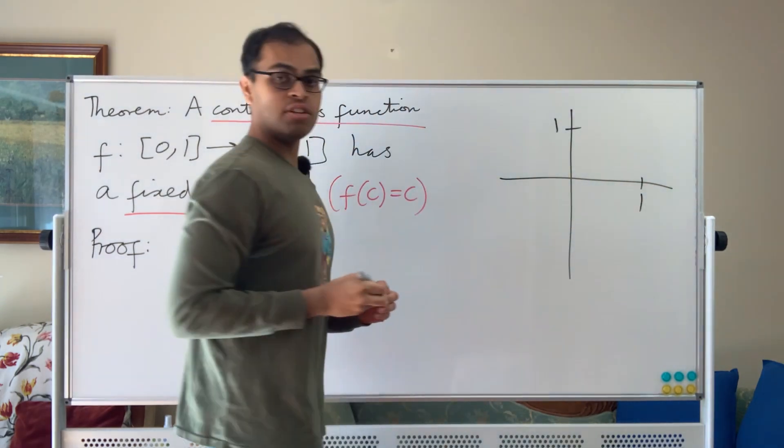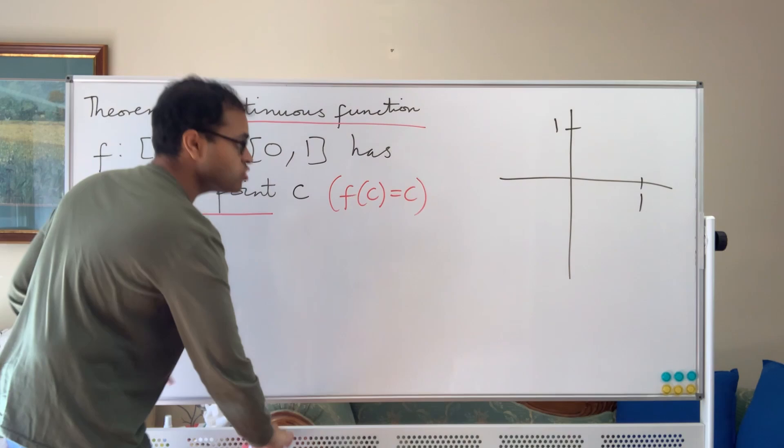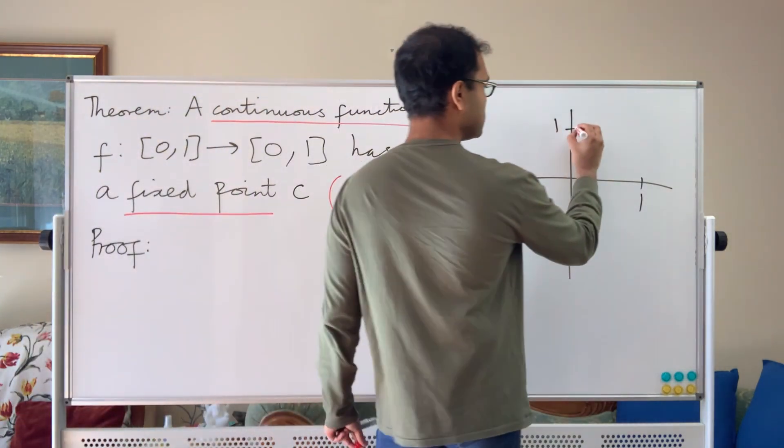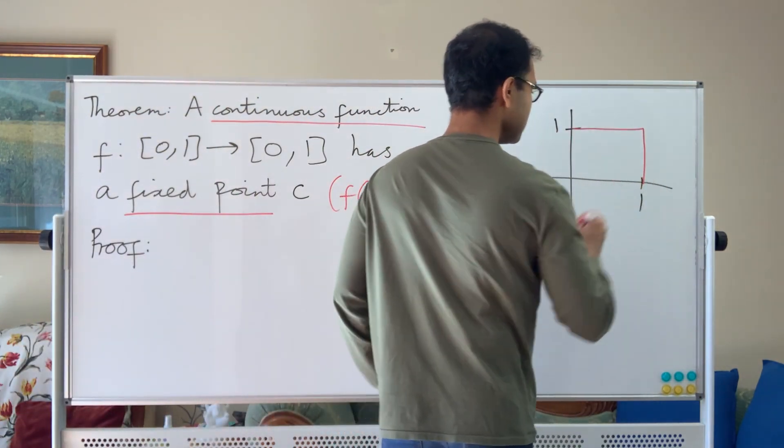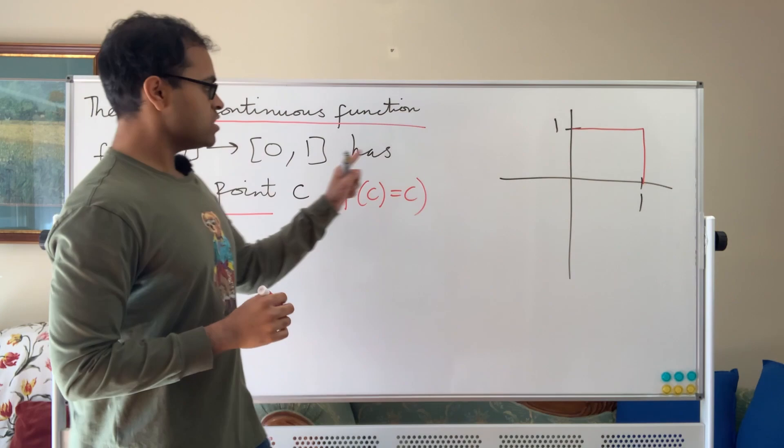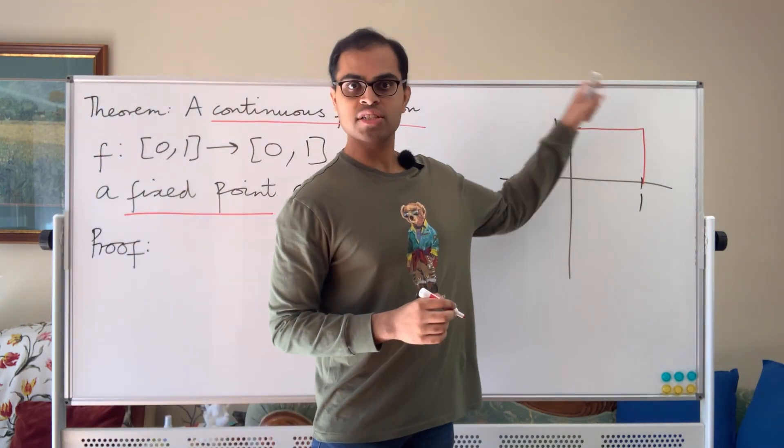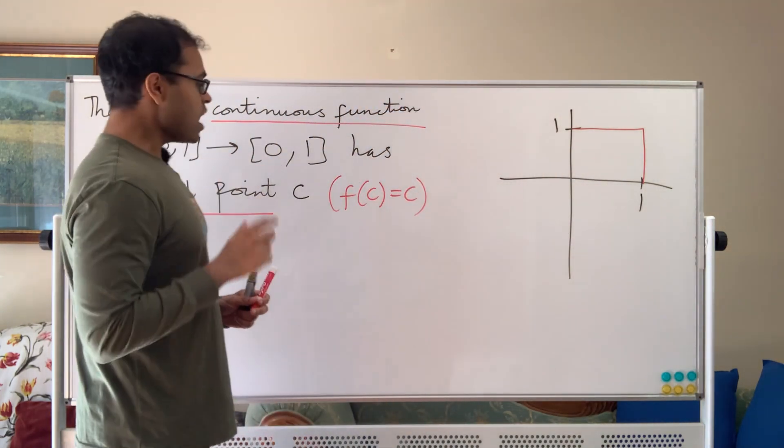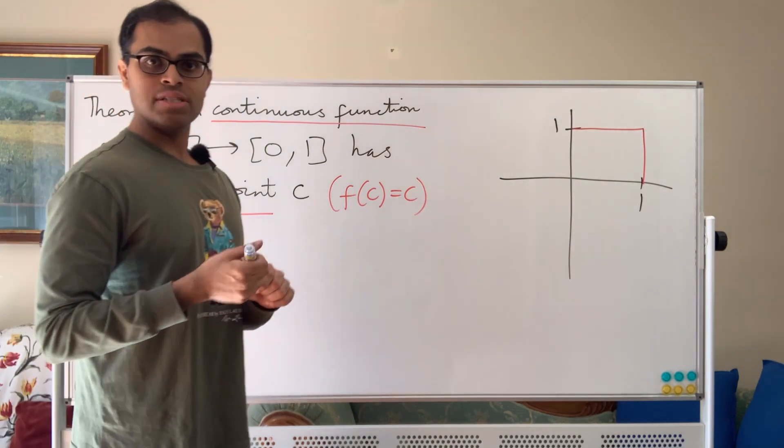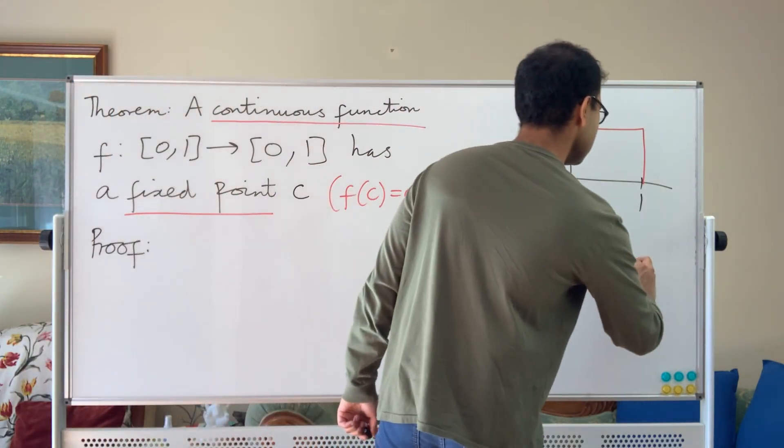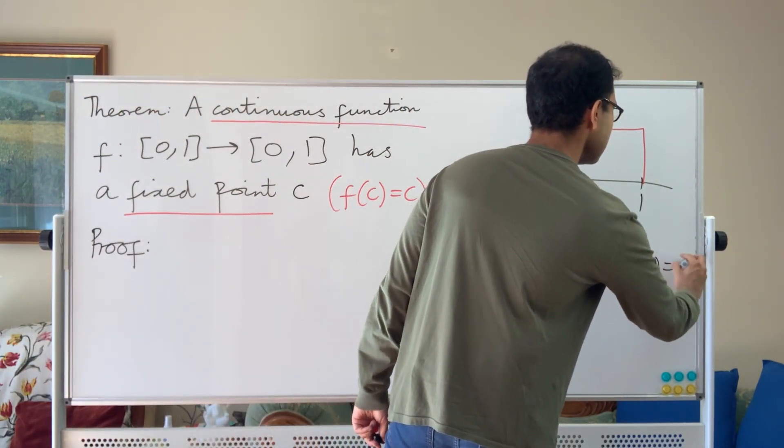Here we have a function from [0,1] to [0,1]. I'm going to draw a little bit of a box here, which is a red box. Because the function is mapping [0,1] into [0,1], we know the graph of the function is always inside that box.